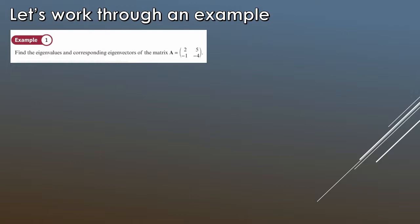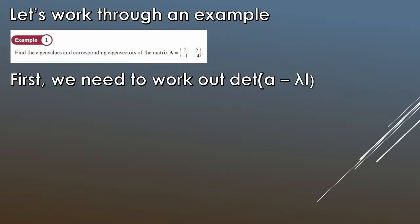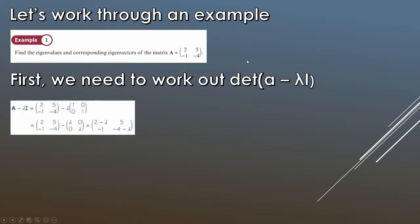It's easier to demonstrate with an example. We're doing two by two today, which are a lot nicer to work with. You always work out the eigenvalues first. We need to find the determinant of (A − λI), so first we write out A − λI. For a two by two matrix the identity is the two by two identity, (1,0;0,1). We subtract λ times the identity from A, giving us the matrix (2−λ, 5; −1, −4−λ).